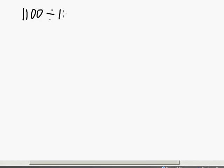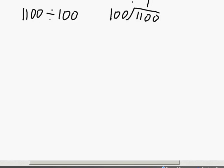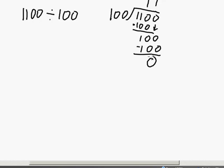The next example: 1100 divided by 100. Let's rewrite that: 100 into 1100. We have three bits in the divisor, so we look at the first three bits: 110. How many times does 100 go into 110? It goes in one time. One times 100 is 100. Do the subtraction: we get 010. We bring down the last zero, giving us 100. 100 into 100 goes one time. One times 100 is 100. Do the subtraction and we're left with a zero remainder. So 1100 divided by 100 is 11.